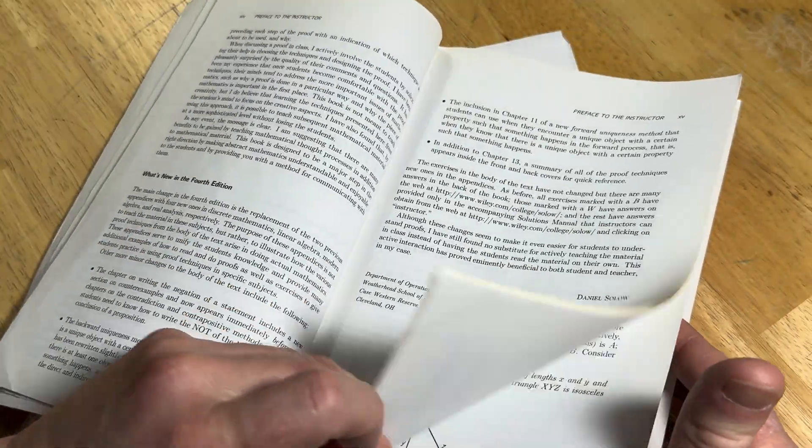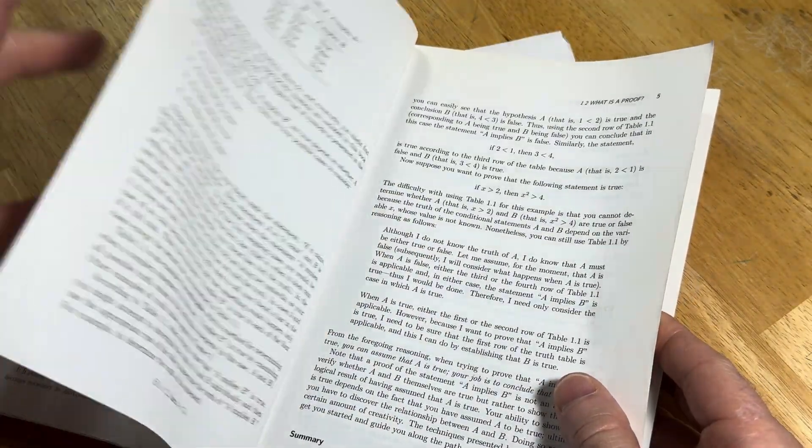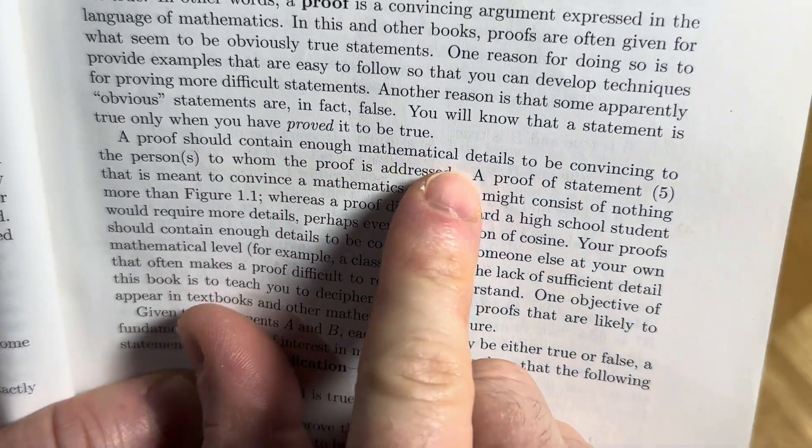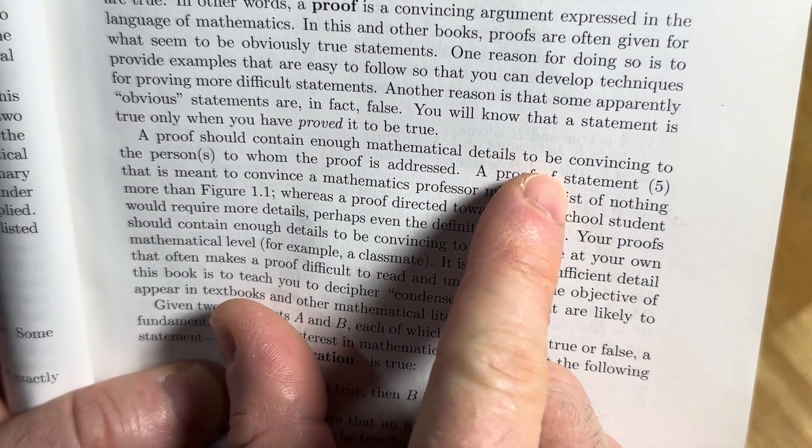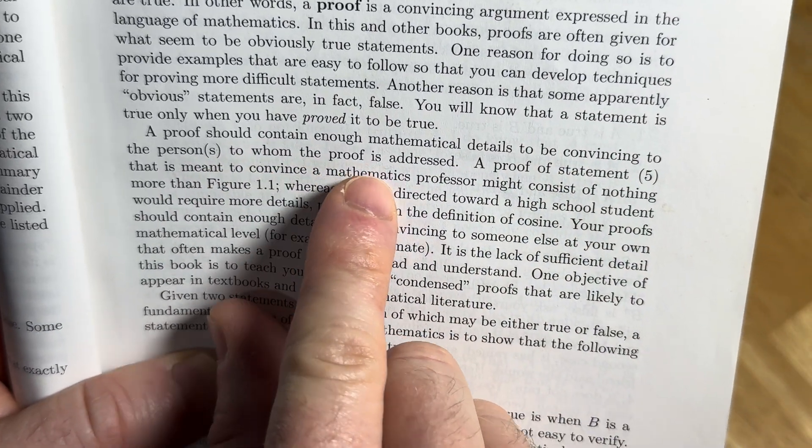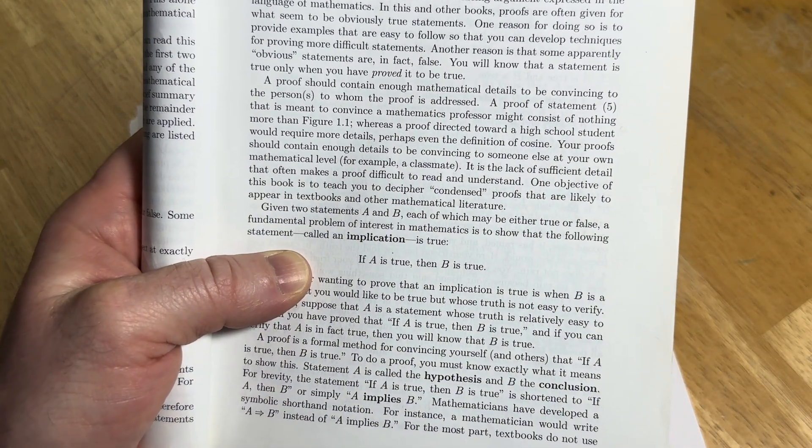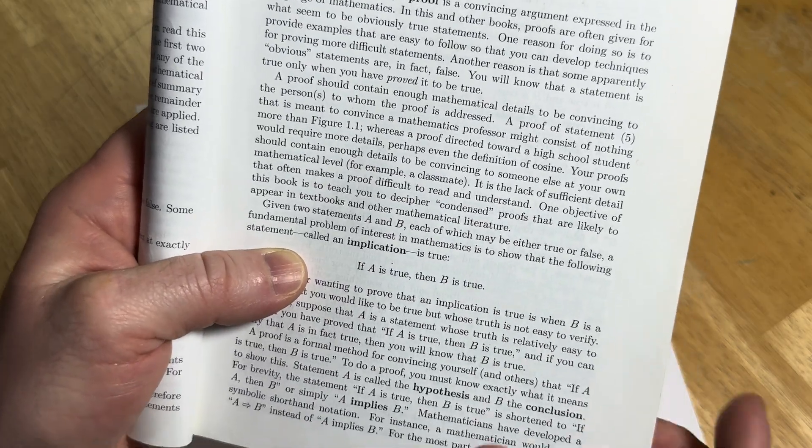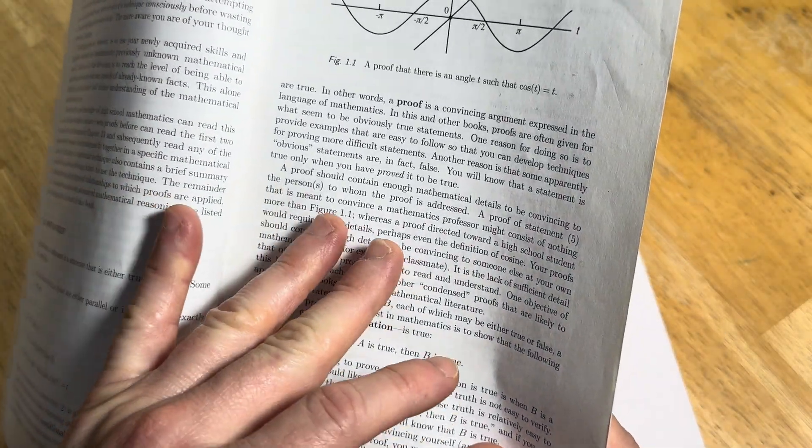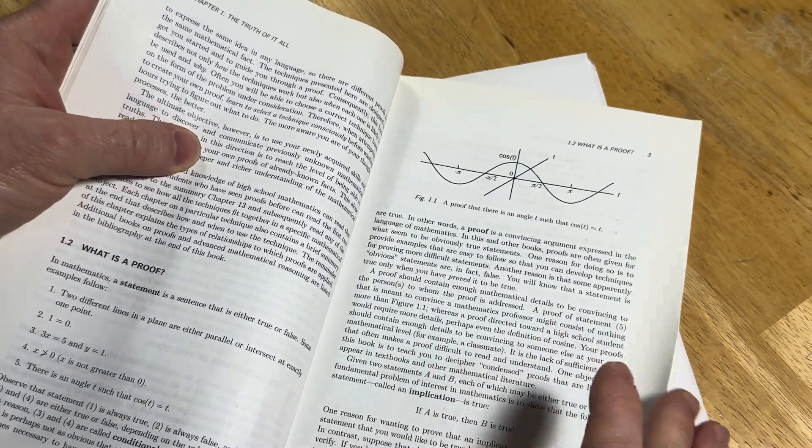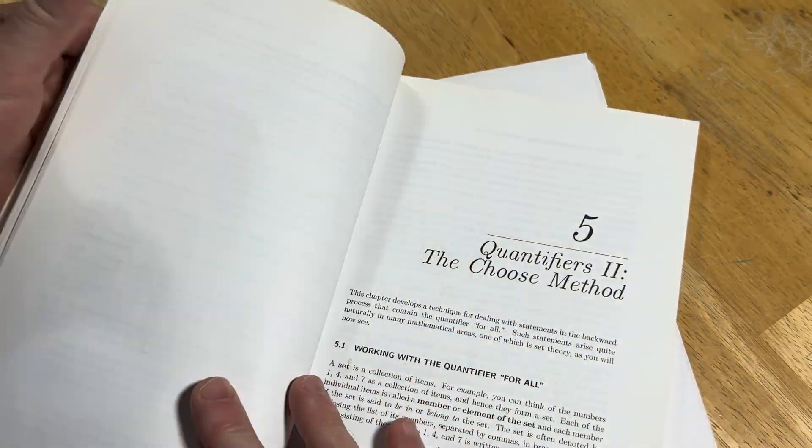Kind of like Daniel talks about at the beginning, Solo mentions that, you know, you should have, let's just go back to that because that was really key. You should have as many details. Here it is. A proof should contain enough mathematical details to be convincing to the person to whom the proof is addressed. So, usually when I make videos, I pretend that I'm a student in a class. And so that when you're reading those proofs, that's how much detail you should include. I try to include as many details as I can when I make proof videos.